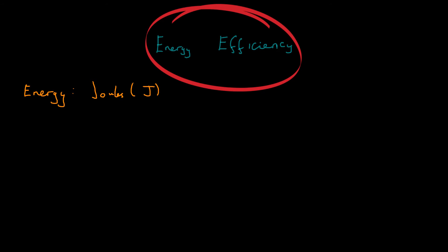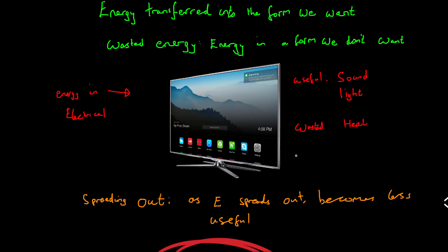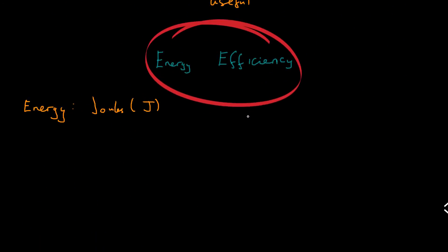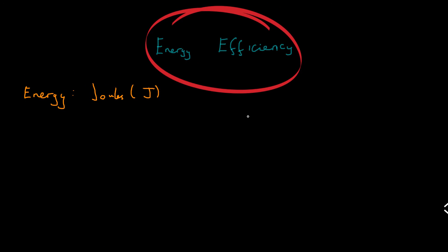Now the energy efficiency of anything tells us how well it is turning the input energy into useful energy. So if we go back to our example of the TV, our energy in is our electrical and our useful energy is sound and light. Now if most of the energy, most of the electrical energy that is, is being turned into the sound and the light, then we can say that this TV is efficient. If loads of this energy is being turned into heat and that is wasted energy, we can say that it's not being very efficient.